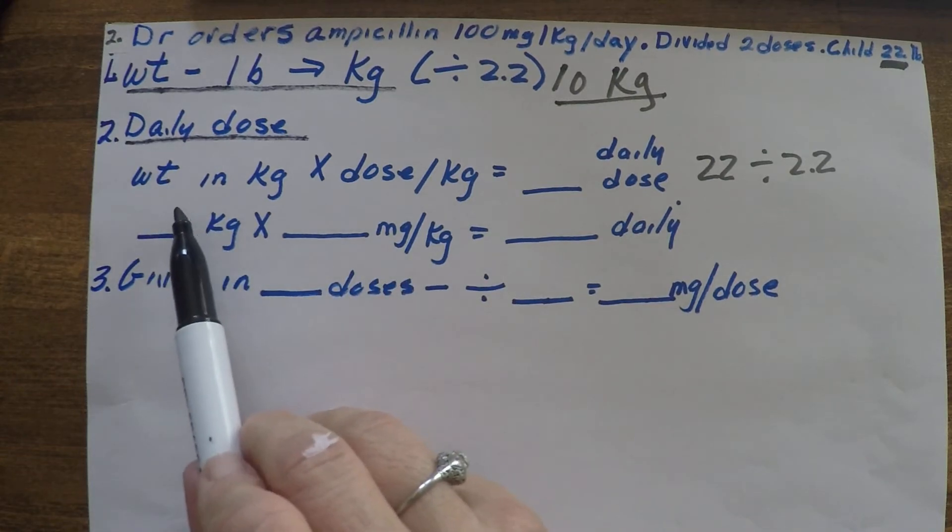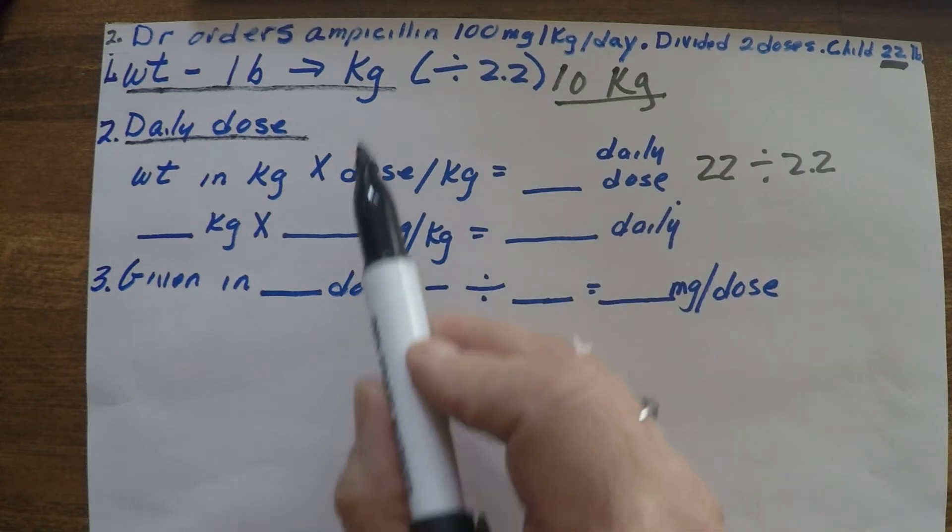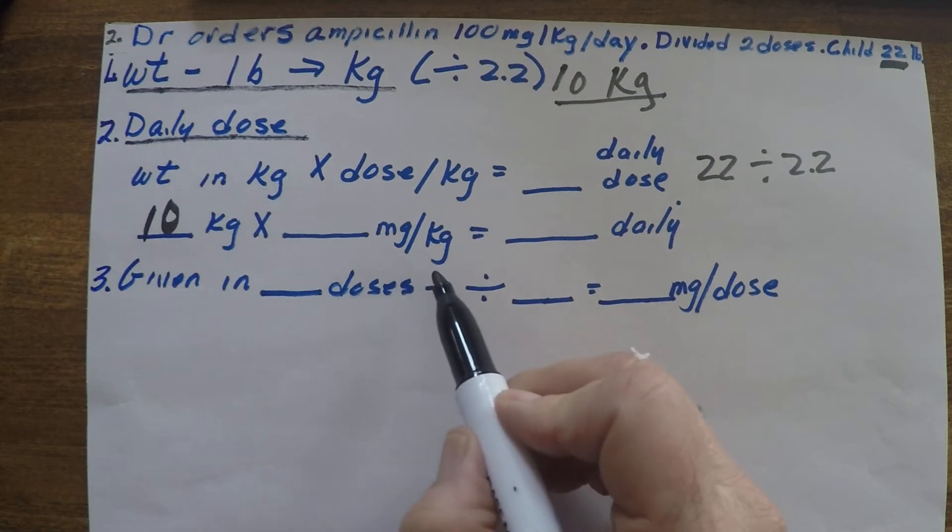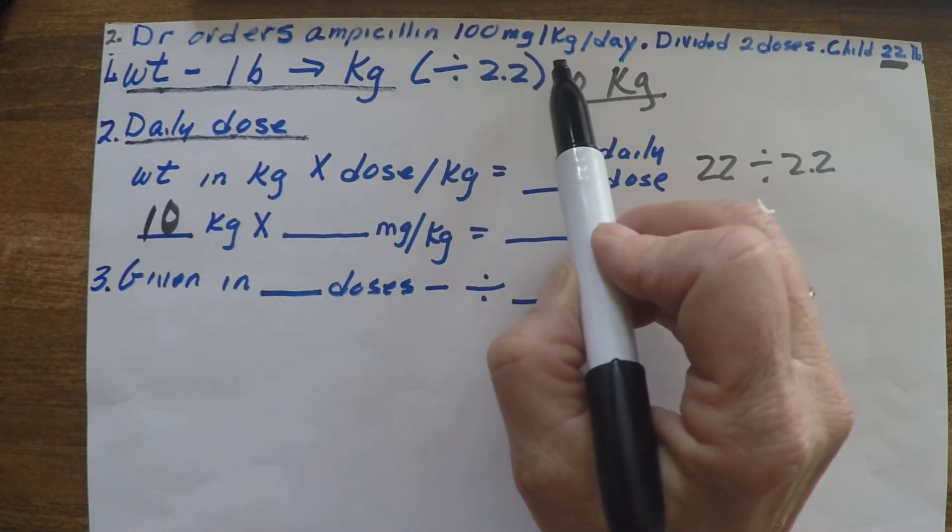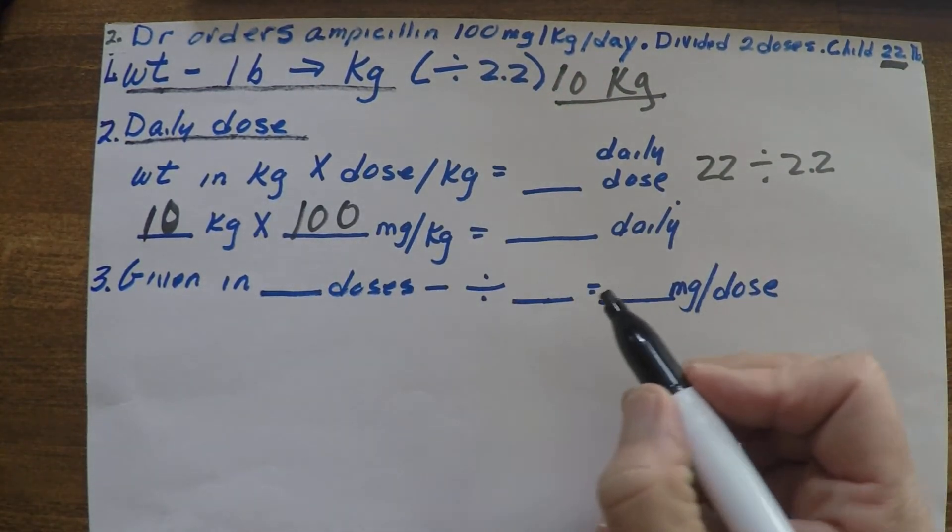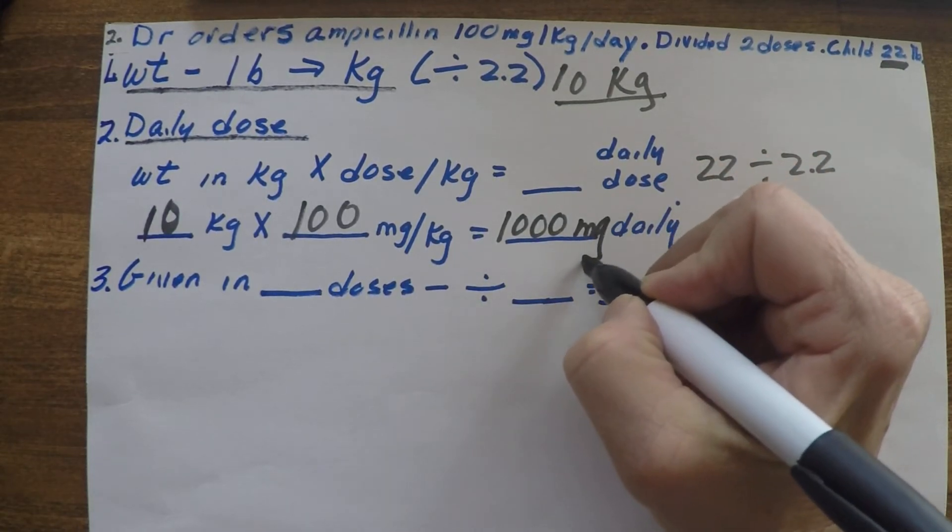All right, next we want to take that weight in kilograms times the dose per kilogram for our daily dose. So our weight in kilograms is 10. Our milligrams per kilogram is right here—ampicillin is 100 milligrams per kilogram. So we'll multiply that times 100, and that's going to give us a daily dose of 1000 milligrams of amoxicillin.